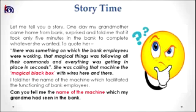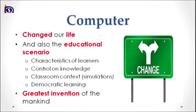Now it's story time. One day my grandmother came home from the bank. She was surprised and told me that it took only five minutes to complete whatever she wanted. To quote her, there was something on which the bank employees were working — that magical thing was following all their commands and everything was getting in place in seconds. She was calling that machine the magical black box with wires here and there. Can you tell me the name of that machine? Yes, my dear learner, it's a computer.